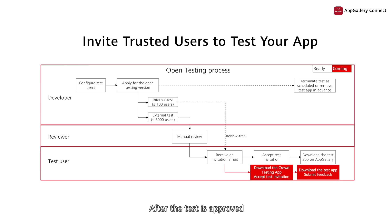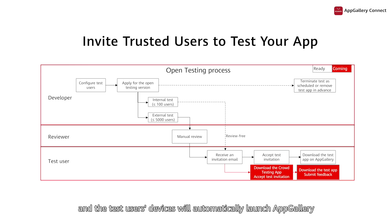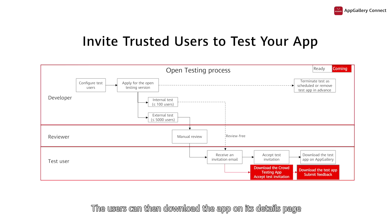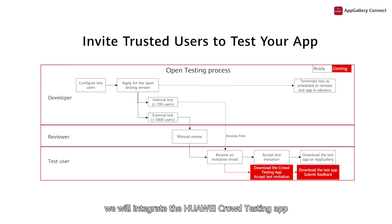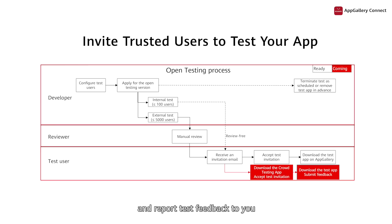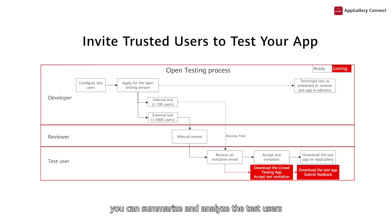After the test is approved, test users will receive an invitation via email or SMS, and the test user's devices will automatically launch AppGallery after the invitation is accepted. The users can then download the app on its details page. Next, we will integrate the Huawei Crowd Testing app, through which users can accept test tasks and report test feedback to you. At the same time, you can summarize and analyze the test users and their test feedback based on crowd testing.